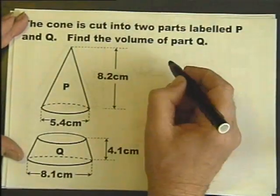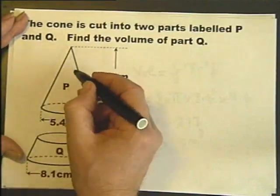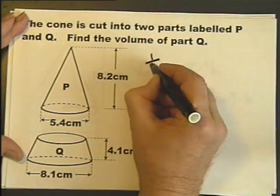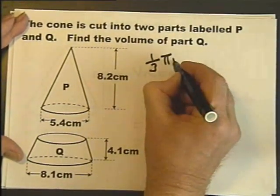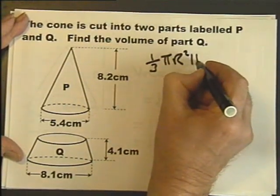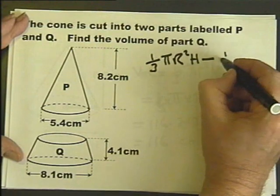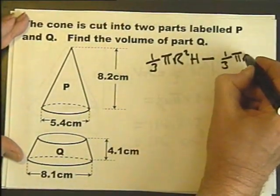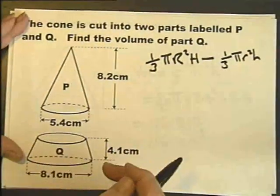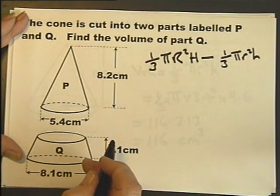So if we do the volume of the large pyramid before it's cut, which is going to be a third pi r squared h, and subtract the volume of this pyramid, third pi r squared h, will have the volume of the frustum of the cone.